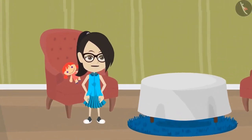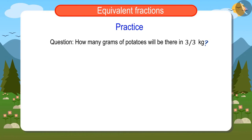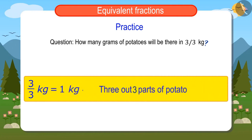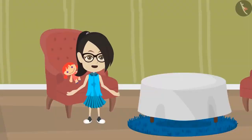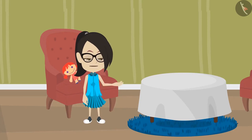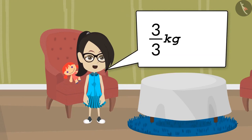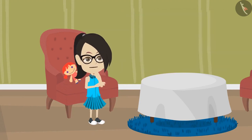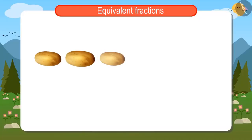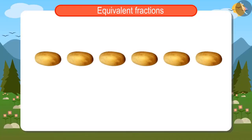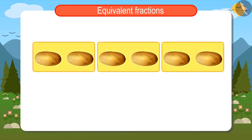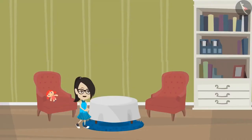Let us find out how many grams of potatoes will be there in 3 upon 3 kilograms. 3 upon 3 means 3 out of 3 parts — that is, all 3 parts of a kilogram of potatoes. If after dividing a kilogram of potatoes into 3 equal parts I keep all 3 parts, it means 3 upon 3 kilograms equals 1 kilogram of potatoes. Assuming I buy a kilogram of potatoes and get a total of 6 potatoes: if I divide these potatoes into 3 parts, there will be 2 potatoes in each part. If I take all 3 of these parts, it will be 6 potatoes out of 6. This means 1 kilo of potatoes equals 3 upon 3 kilos.